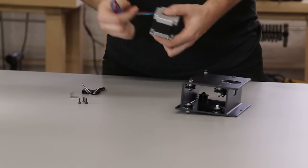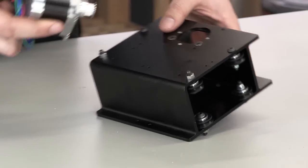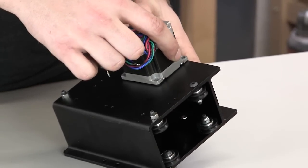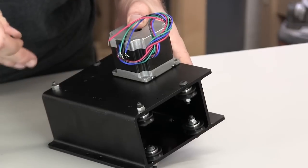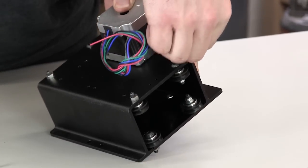Now we're going to attach the NEMA 23 to the extrusion using four screws. You'll see that there are threaded holes on the extrusion and the screws go right through the motor and into those.